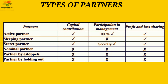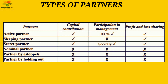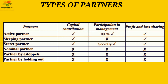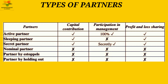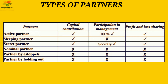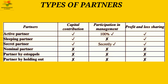Next we discuss types of partners. There are six types: active, sleeping, secret, nominal, partner by estoppel, and partner by holding out. The three criteria are capital contribution, participation in management, and profit and loss sharing. An active partner contributes capital, participates in management, and shares profit and loss — active in everything. A sleeping partner contributes capital and shares profit and loss but does not participate in management decisions. A secret partner contributes capital, participates in management secretly, and shares profit and loss.